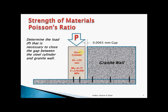The given information includes: the material is steel, the diameter of the cylinder is 250 millimeters, mu (which is Poisson's ratio) is the relationship between transverse strain and actual strain, and the modulus of elasticity is 220,000 MPa.